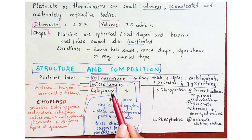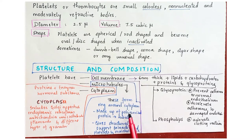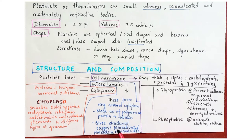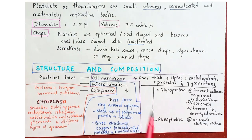Microtubules form a ring around the cytoplasm. These are made up of polymerized protein i.e. tubulin, and give structural support to inactivated platelets to maintain the oval or disc shape.